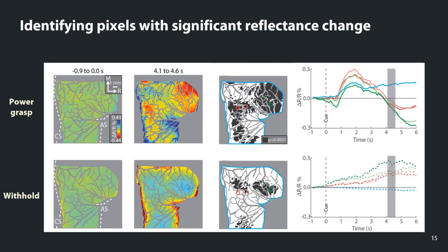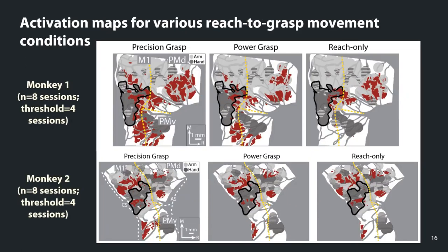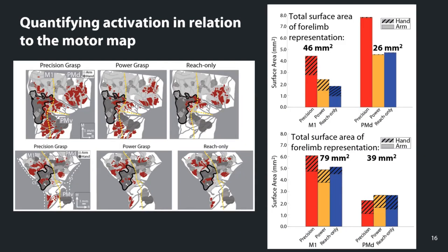We can monitor the reflectance change over time by averaging values in regions of interest, indicated by colored circles in both the withhold and power grasp conditions. After acquiring significant pixels for each individual session, we combine across sessions by aggregating activity maps aligned using the blood vessel mask, and set a threshold to note where there are active pixels in at least four sessions for each condition. We quantified activity in relation to the arm and hand in both M1 and PMD, and even in the most maximally activated condition, only a small portion of the arm and hand representation is active to support reach-to-grasp movement.